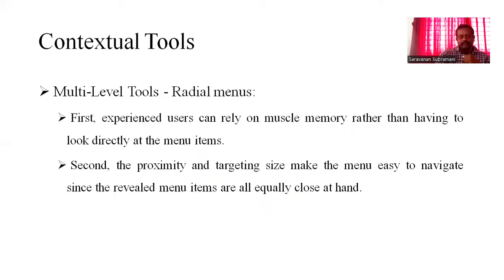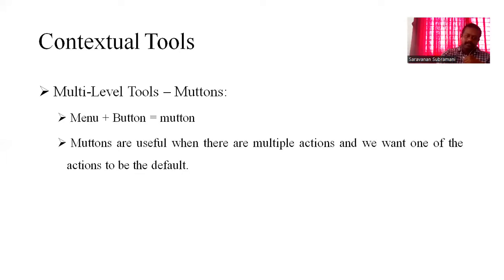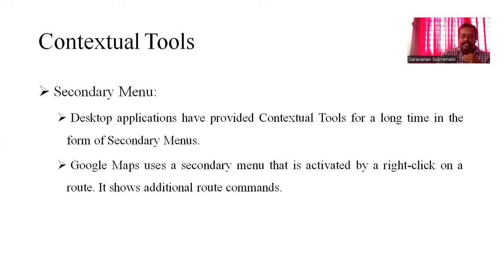Radial menus: first, experienced users can rely on muscle memory rather than having to look directly at the menu item. Second, the proximity and targeting size make the menu easy to navigate since the revealed menu items are all equally close at hand. There are often mutants in multi-level tools — a menu plus button combination called a mutant — which is useful when there are multiple actions and you want one action to be the default.